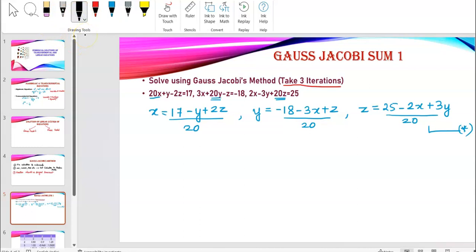So, we'll start with the first iteration or the initial iteration. Iterations are nothing but approximations. And every time you approximate, you try to improvise. You try to make it a better answer. So, you always start with x is 0, y is 0 and z is 0. This is when you start with Gauss-Jacobi's.